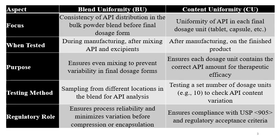Blend uniformity focuses on the consistency of API distribution in the bulk powder lubricated blend before the final dosage form. Content uniformity focuses on the uniformity of the API in each final dosage unit — i.e., tablet, capsule, and some other products like sachets.